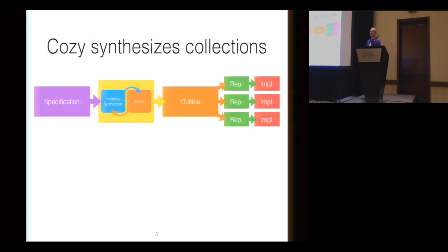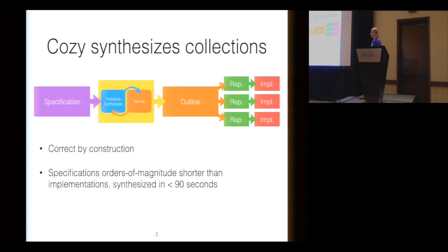We have a tool called Cozy that simplifies this process. You specify the data structure you want, and we can take you all the way to the implementation. The takeaways are that these constructions can eliminate programmer effort with code magnitude shorter and simpler than the original implementation. They can construct implementations in less than 90 seconds, and the performance is equivalent to the performance of handwritten implementations.